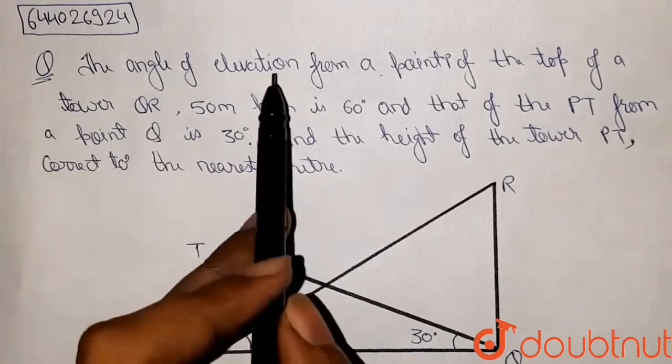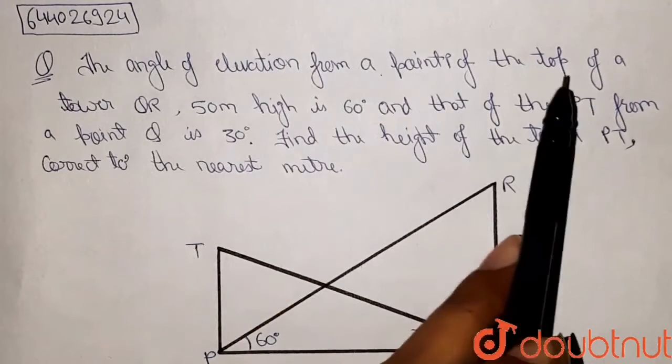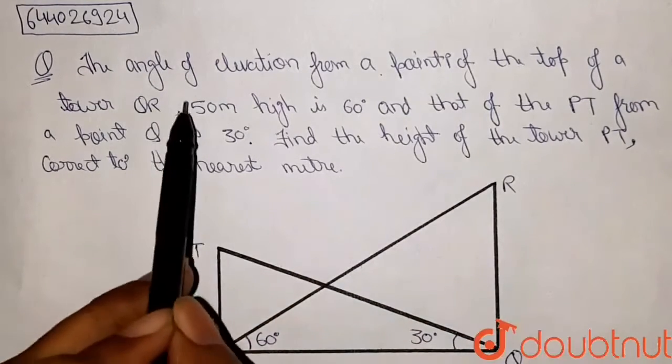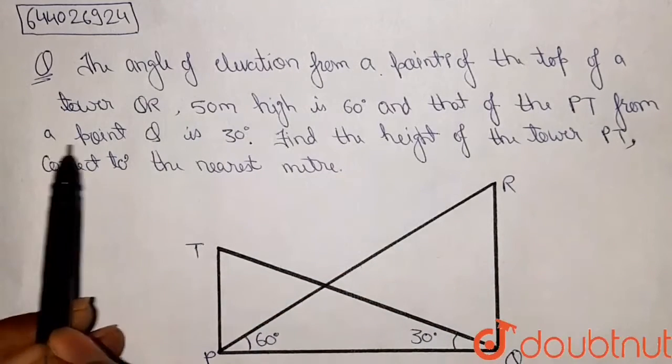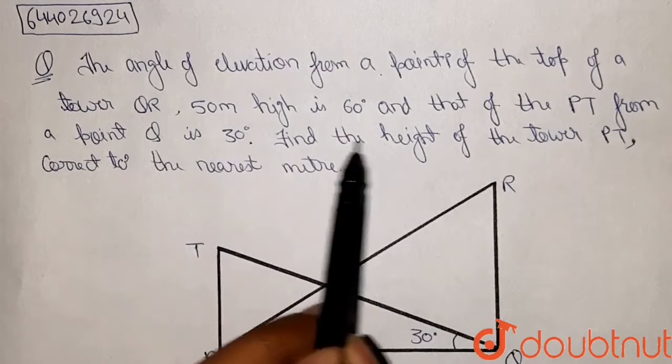The angle of elevation from point P to the top of tower QR, 50 meters high, is 60 degrees, and that of PT from point Q is 30 degrees. Find the height of tower PT correct to the nearest meter.